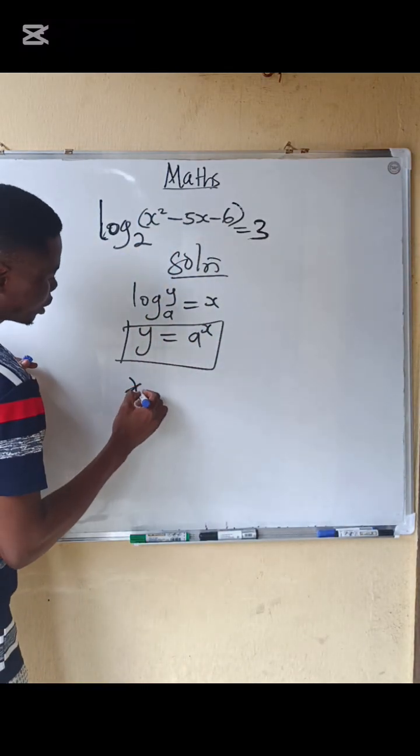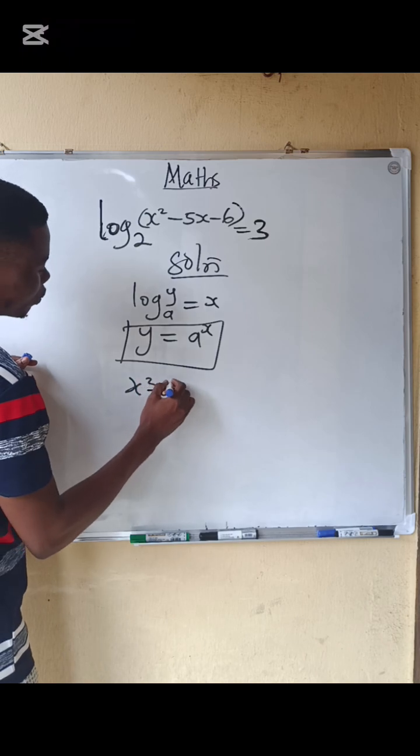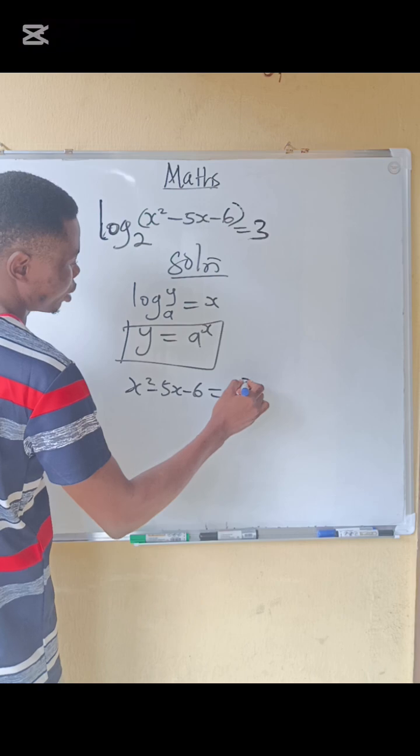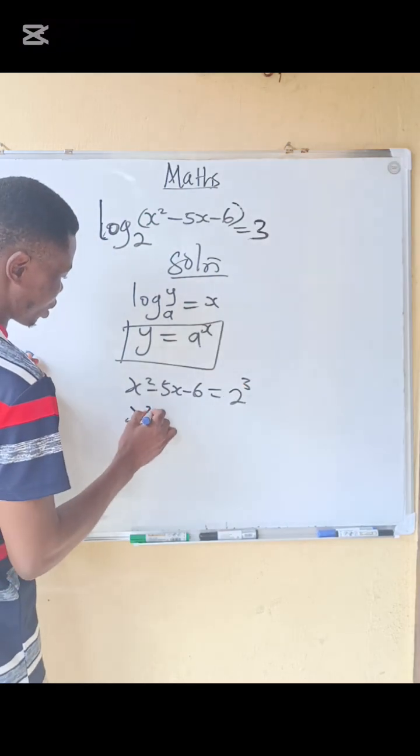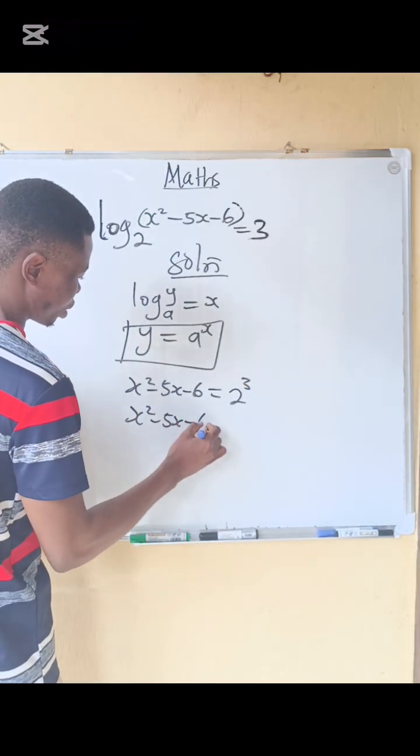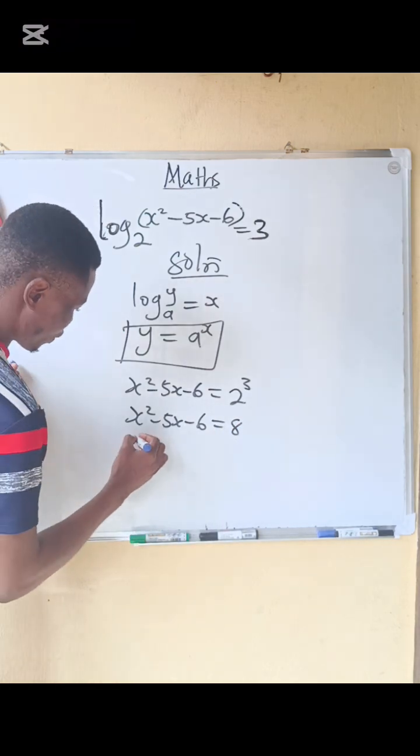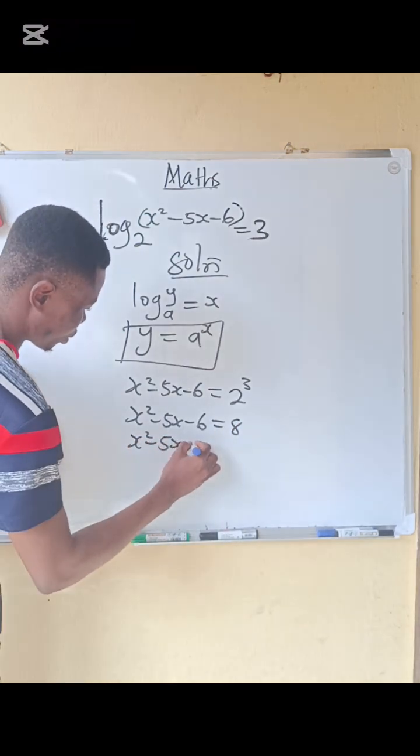So it means that x squared minus 5x minus 6 equals 2 to the power of 3. So x squared minus 5x minus 6 equals 8. Bring it to this side. I have x squared minus 5x minus 6 minus 8 equals 0.